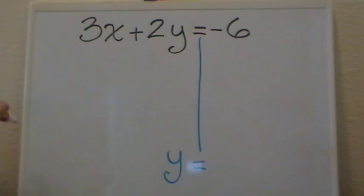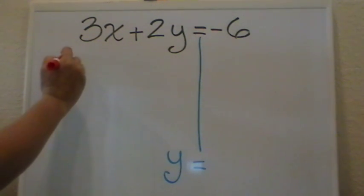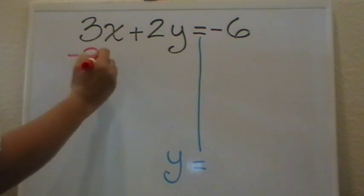Here's where some of the confusion starts. We don't want to cancel only the 3, we want to cancel 3x. So in order to do that, I have to do the opposite, which in this case will be negative 3x.